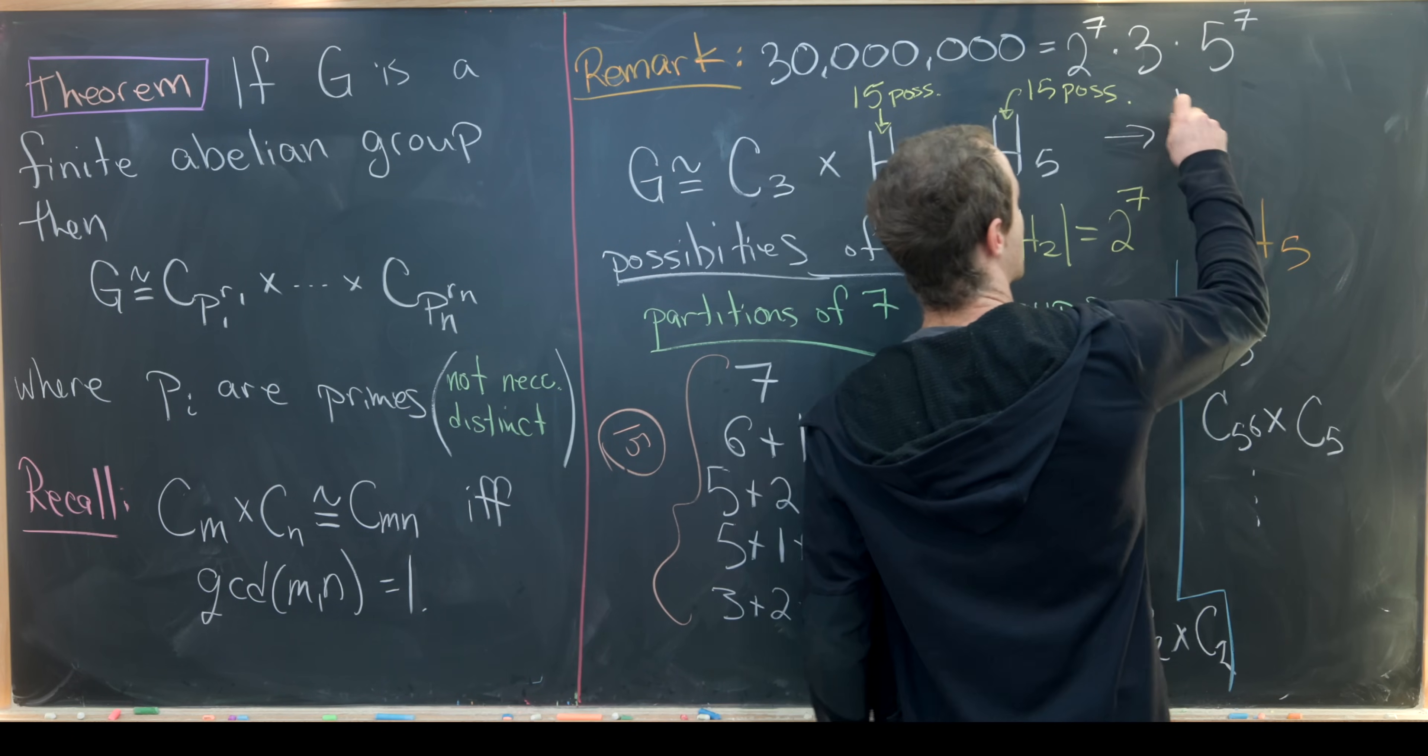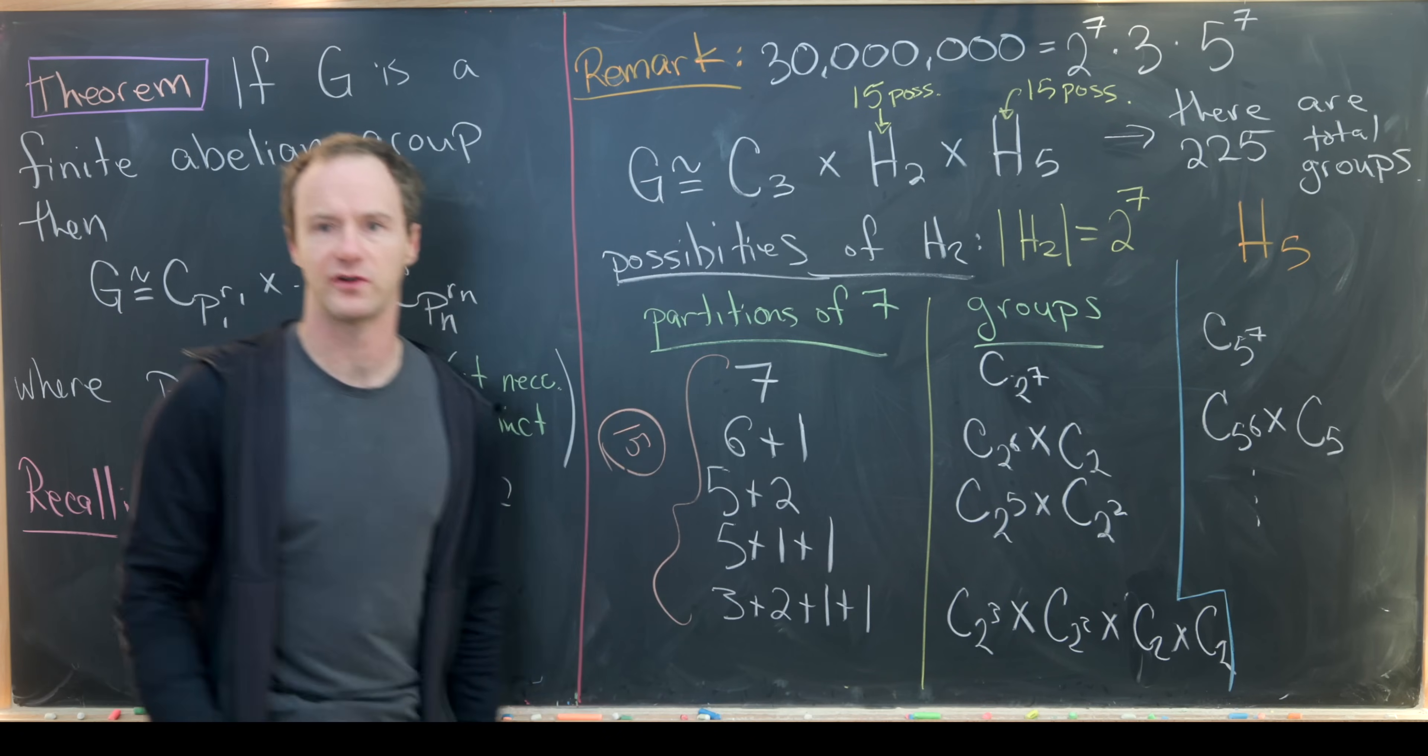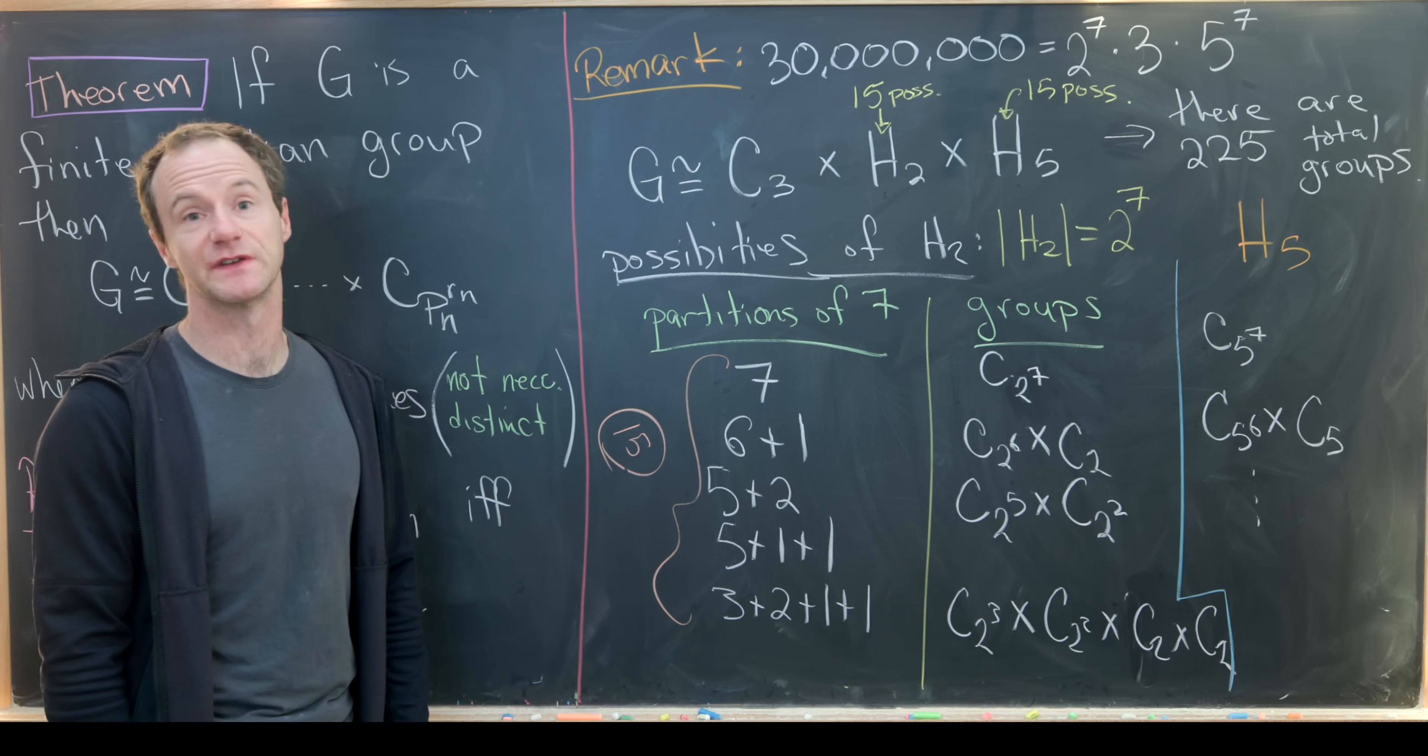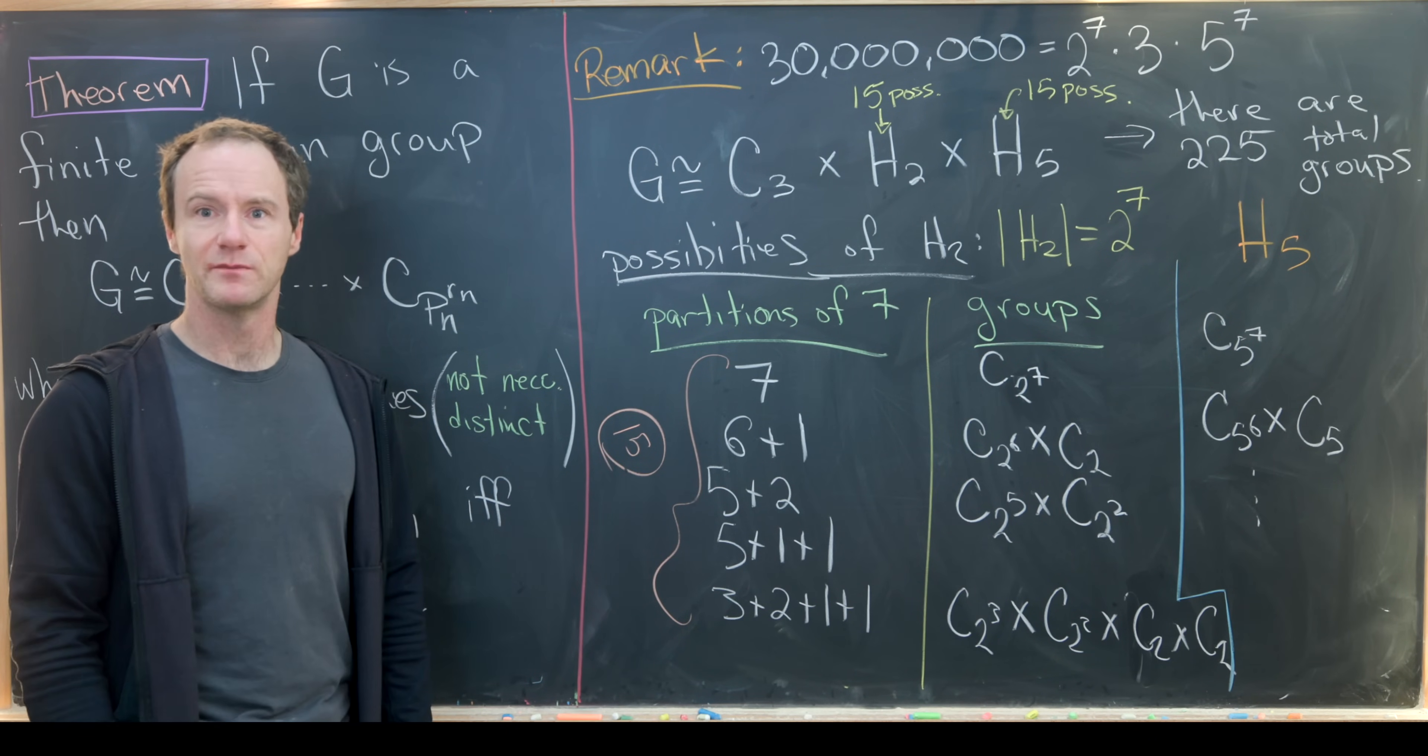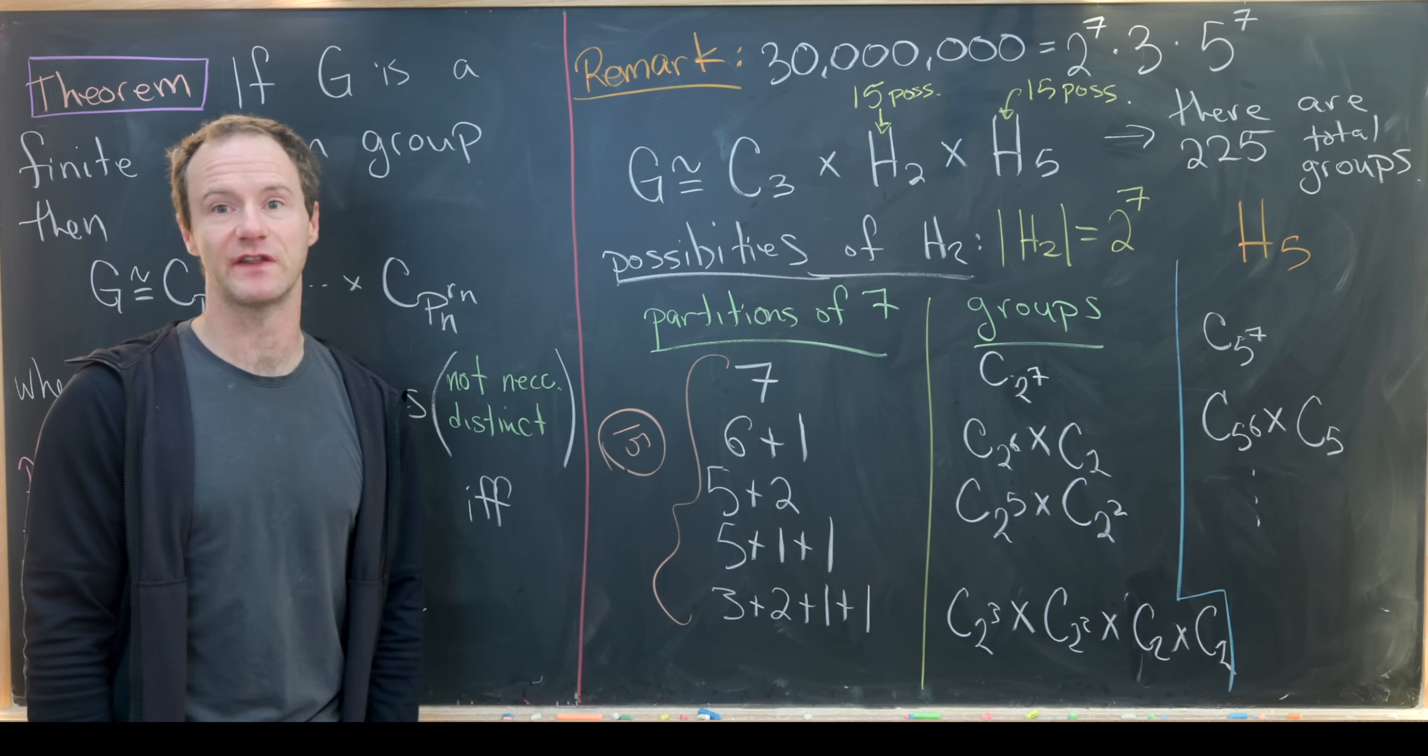So really that tells us there are 225 total groups. And those are not all of the groups of order 30 million. Those are just the abelian groups of order 30 million. To finish this off I'll write down a couple of examples of non-abelian groups of order 30 million. I think it's unreasonable to classify all such groups. But if anyone has ideas or literature towards classification of groups with order this high, maybe leave it in the comments.